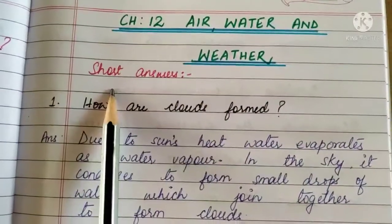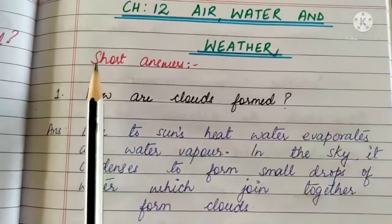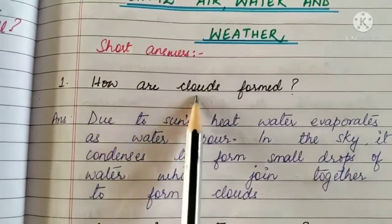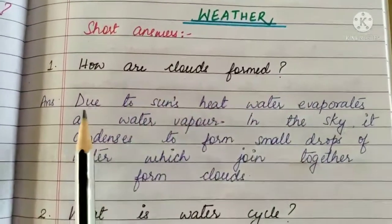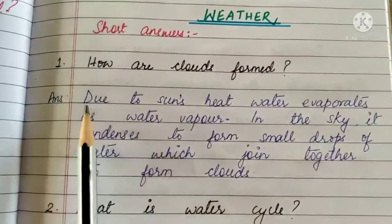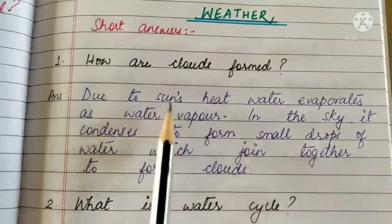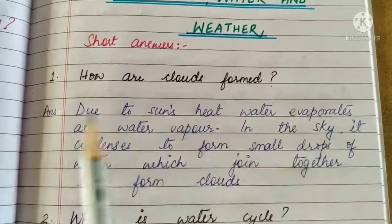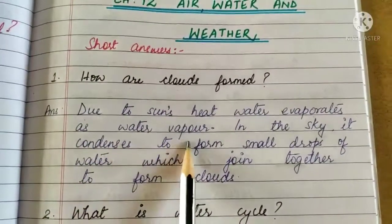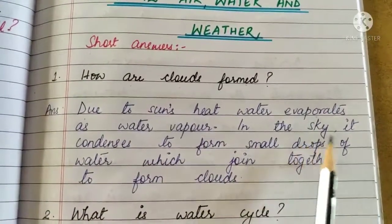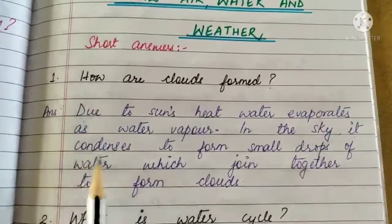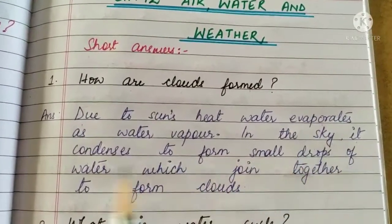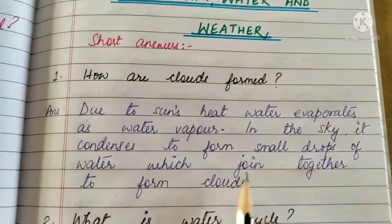Dear students, now that we have done the book exercises from Chapter 12: Air, Water and Weather, let us proceed to the question answers. First we will do the short answers. How are clouds formed? Answer: due to the Sun's heat, water evaporates as water vapor.